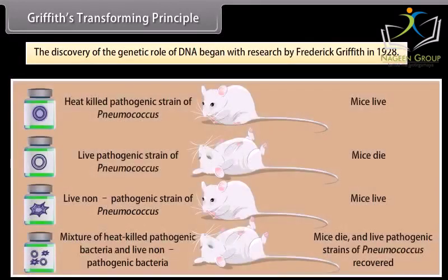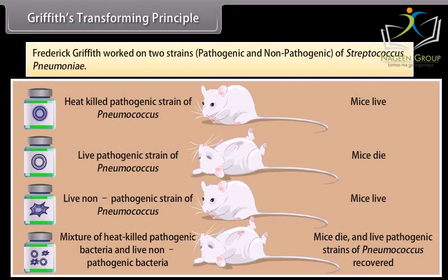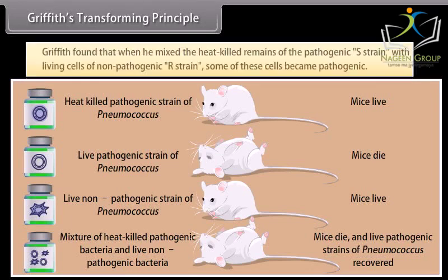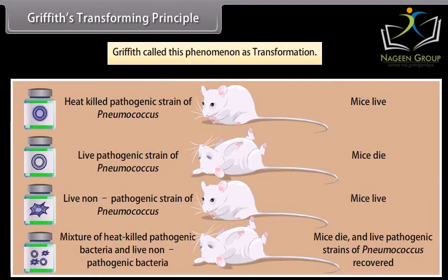Griffith's Transforming Principle. The discovery of the genetic role of DNA began with research by Frederick Griffith in 1928. Frederick Griffith worked on two strains — pathogenic and non-pathogenic — of Streptococcus pneumoniae. Griffith found that when he mixed the heat-killed remains of the pathogenic S strain with living cells of the non-pathogenic R strain, some of these cells became pathogenic. Griffith called this phenomenon transformation.